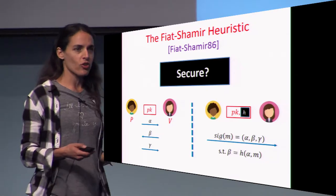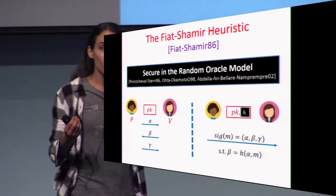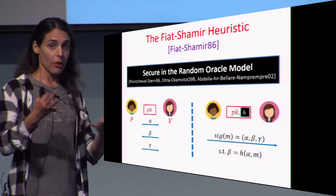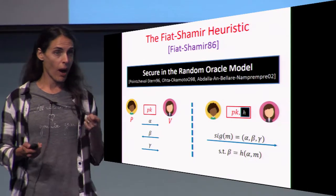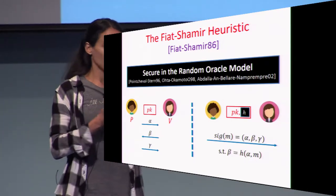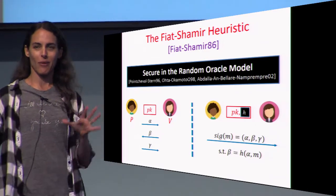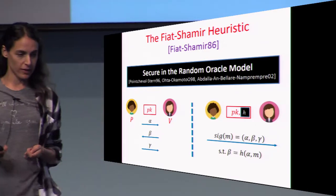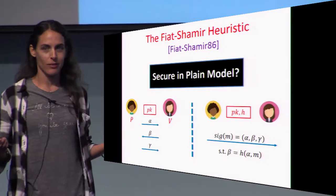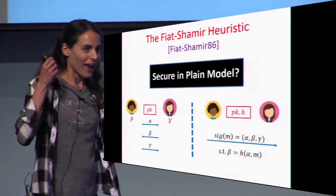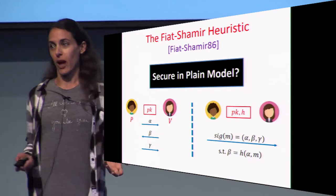That's the reason why security should hold. And indeed, this was formalized in the random oracle model — it was proved that this paradigm is secure in the random oracle model, if the hash is modeled as a random oracle, by a series of beautiful work starting with Pointcheval and Stern, who gave a really beautiful idea with the forking lemma. The main question that remains is: is it secure in the plain model? Can we come up with an actual hash function — not a random oracle — for which this paradigm is secure?